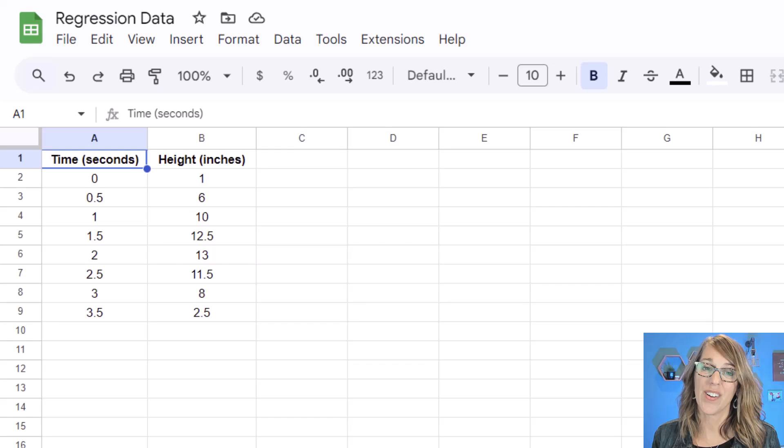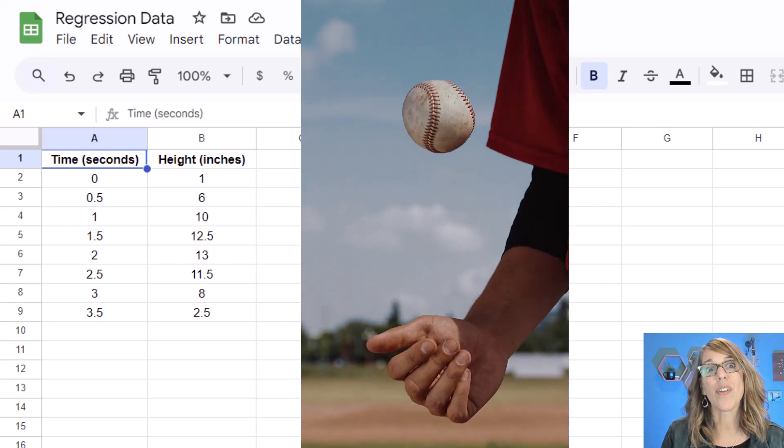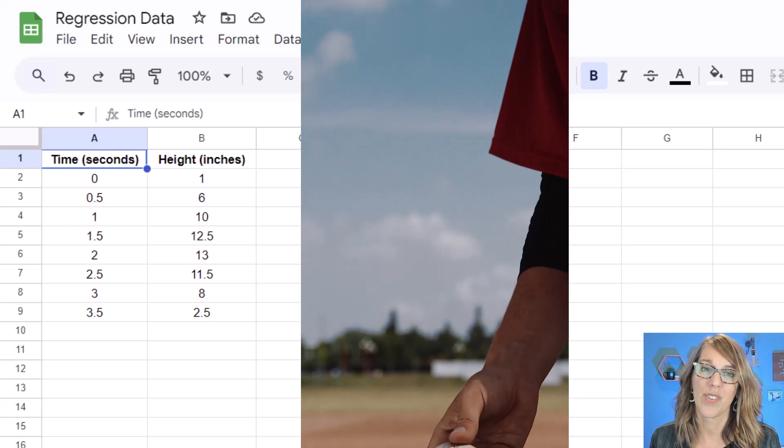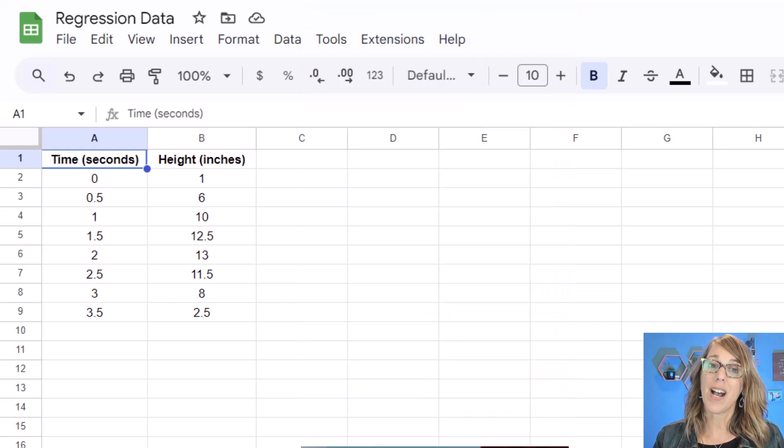I want to start with this data here in Google Sheets. It represents the height of a ball that I've thrown up in the air versus time in seconds.